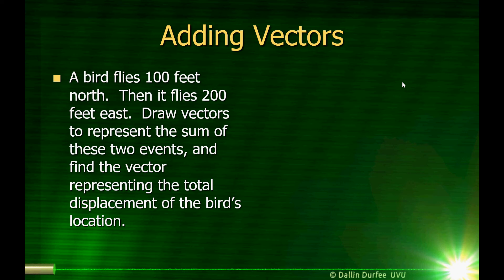Imagine that a bird flies 100 feet north, then it flies 200 feet east. We want to draw vectors that represent the sum of these two events and find the vector representing the total displacement of the bird's location. Let's let north be upwards, like on a map. There is the bird flying 100 feet north. Then it's going to fly 200 feet east, so I want an arrow pointing east that's twice as long as my arrow pointing north.